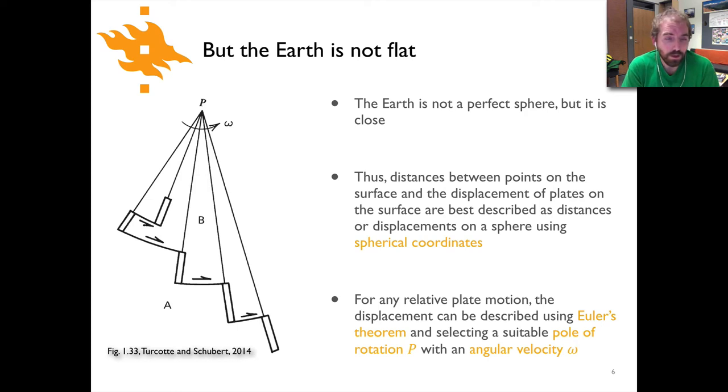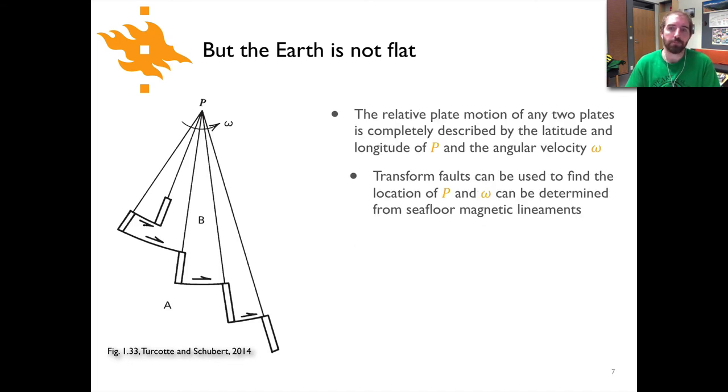If we want to describe plate motions on the surface of the earth, one of the key ideas is that we can describe the motion completely using Euler's theorem. This means that if we find a pole of rotation P, as shown here in the picture, and an angular velocity, so rotation of so many degrees per unit time of two plates with respect to one another, we can actually completely describe plate motions. If we know the position latitude and longitude of some point P, a pole of rotation, and we know the angular velocity, we can use that to describe completely the motion between the plates A and B as shown in the picture here.